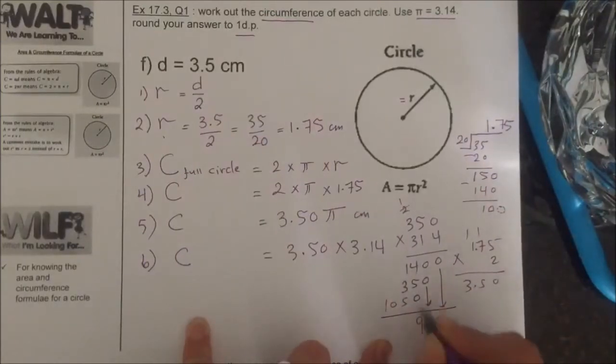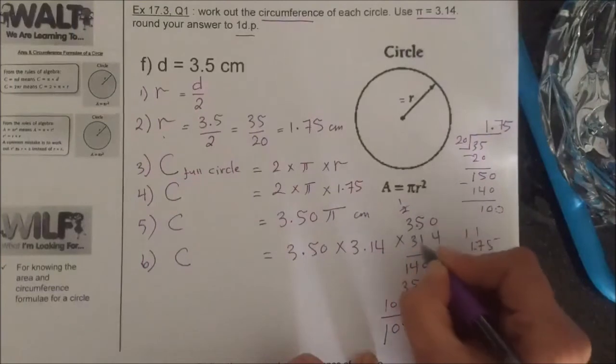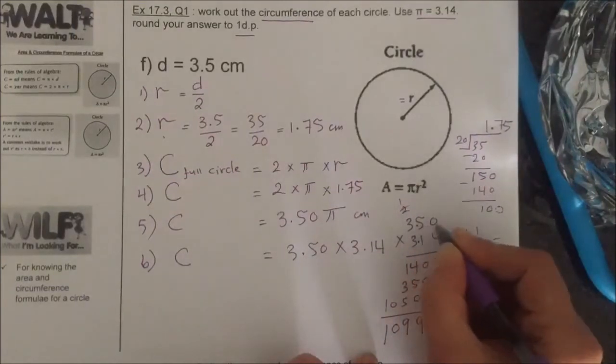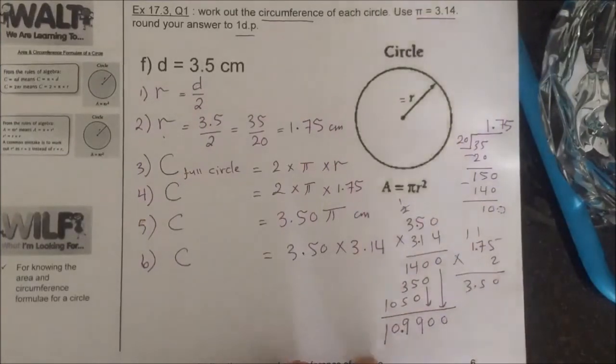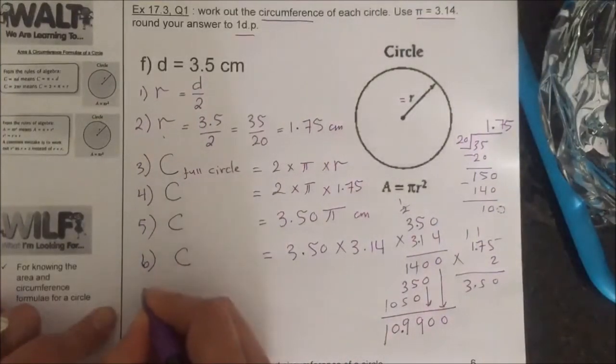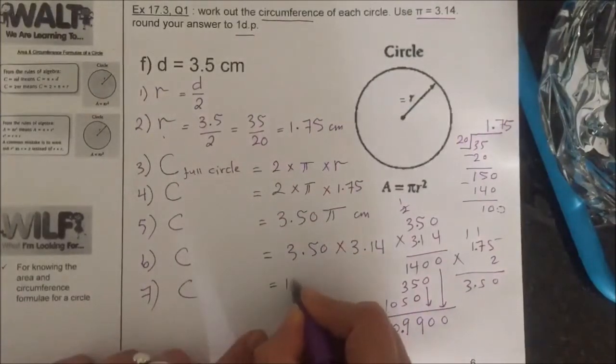3 times 5 is 15, 3 times 3 is 9, and 1 is 10. Bring this one down is 0. Bring this one down is 0. 4 plus 5 is 9, 1 plus 3 is 4, 4 plus 5 is 9. 9, 0, 1, decimal here and decimal here. So we have 1, 2, 3, 4. And the final answer will be C is equal to 10.